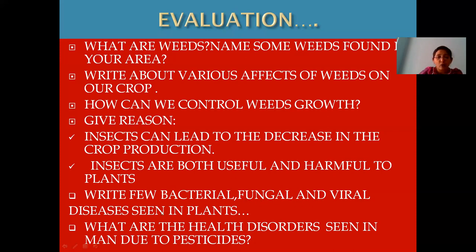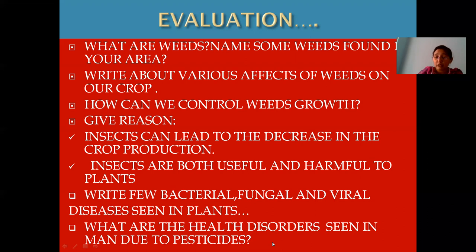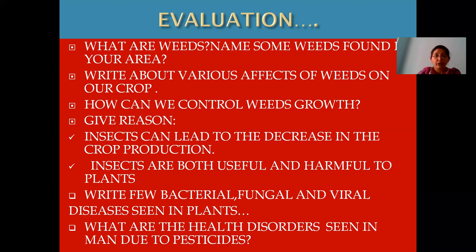Next: Write few bacterial, fungal, and viral diseases seen in plants. For bacterial diseases, you can give canker as an example. For fungal, smut and rust disease. For viral, mosaic disease. The last question: What are the health disorders seen in man due to pesticides? Cardiovascular problems, respiratory problems, nerve-related issues, reproductive problems in males, and cancer. I hope you have understood the complete topic. Go through the content given in your textbook, try to answer all these questions on your own, and get it evaluated from your teachers.